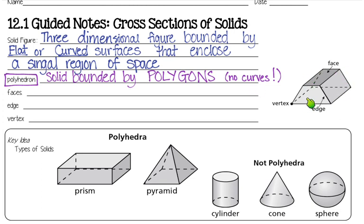If you look over here at this figure, everything is made by straight lines. We have a trapezoid, a parallelogram, a rectangle. We've got all polygons here. So this right here is a polyhedron.